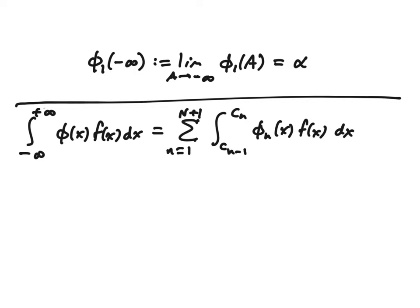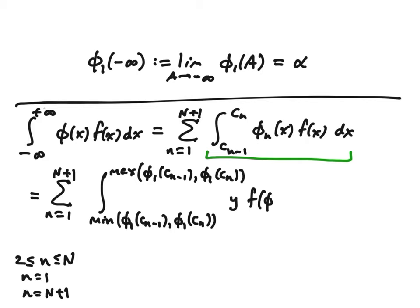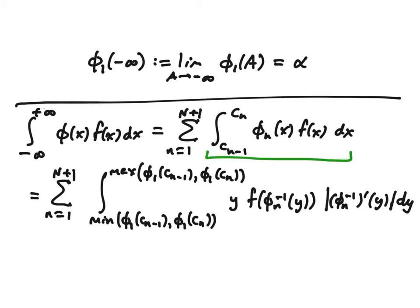Remember that the improper integral over the entire real line of φ times f can be broken up as the sum of all these pieces, because those pieces are pairwise disjunct intervals whose union is the entire real line. And in each case, regardless of the value of little n, we found that the integral could be changed via a change of variables, and the answer was always the same: the min of φ_n of c_{n-1} and φ_n of c_n, up to the max of those same two values, and we integrate y times f of φ_n inverse of y times the absolute value of φ_n inverse prime dy.